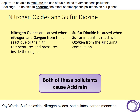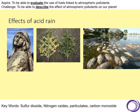Both of those pollutants cause acid rain, but they are formed in different ways and you can be asked to describe how those pollutants form. Acid rain has several effects: it's known to react with limestone statues and buildings, it can affect plant growth, and it can also change the pH of rivers and lakes so that animals and plants living in those areas cannot survive anymore.